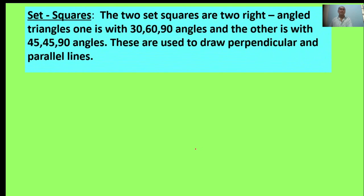Set squares. The two set squares are two right-angled triangles. One is with 30, 60, 90 degrees and the other is with 45, 45, 90 angles. These are used to draw perpendicular and parallel lines.